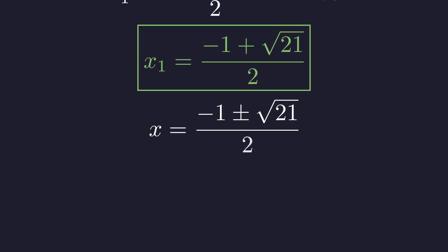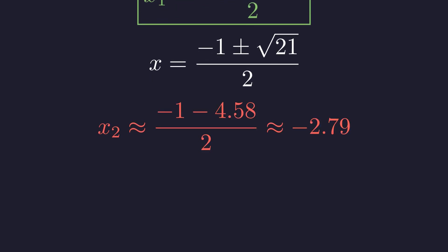Now we return to our second potential solution from case one. This one is approximately negative 2.79. This is outside our valid domain, so it's an extraneous solution.